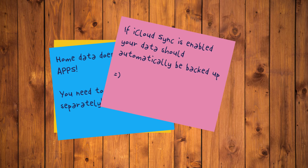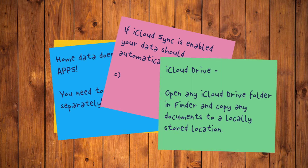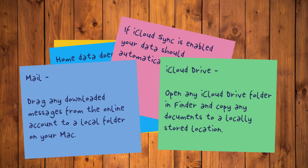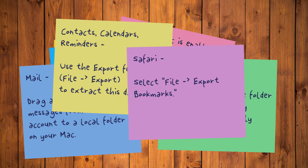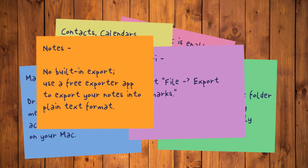You can also choose to export the data from specific apps. For iCloud Drive, open any iCloud Drive folder in Finder and copy any documents to a locally stored location. For Mail, drag any downloaded messages from the online account to a local folder on your Mac. For Contacts, Calendars, and Reminders, use the export feature — File > Export — to extract this data. For Safari, select File > Export Bookmarks. For Notes, there's no built-in way of exporting the data, but you can use a free exporter (link in the description) to export your notes into a plain text format.